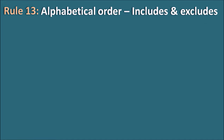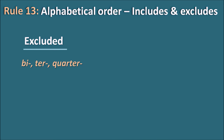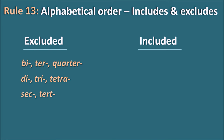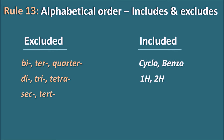Rule 13: what is included and excluded from alphabetical ordering. Excluded terms: bi, ter, quarter; di, tri, tetra; secondary and tertiary designations. Included terms: prefixes like cyclo and benzo; indicated hydrogens like 1H, 2H; and prefixes iso and neo — these must be considered in alphabetical ordering.